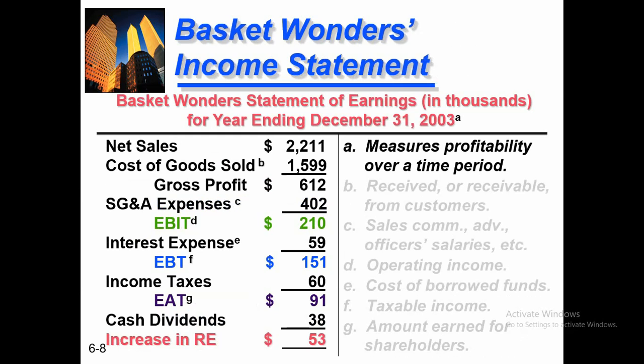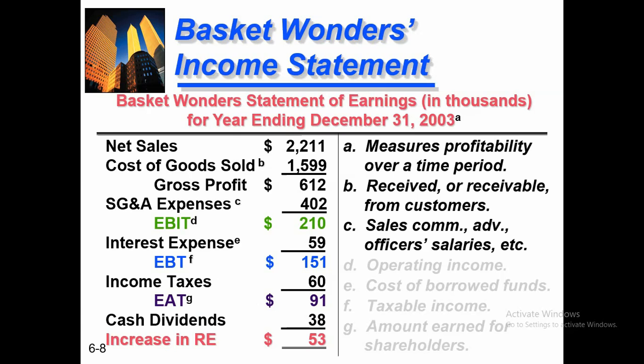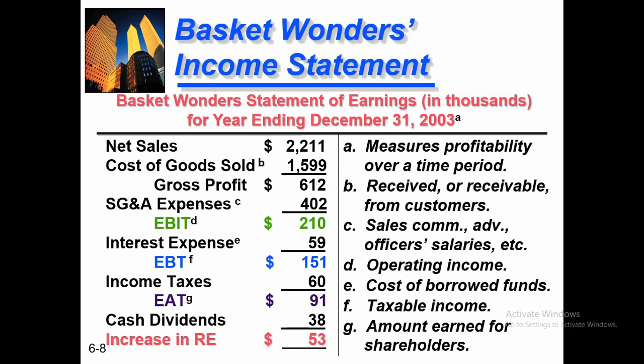Here is the income statement data. Net sales are 2,211, cost of goods sold is 1,599, gross profit is 612, EBIT is 210, interest is 159, and earnings after taxes (EAT) is 91, with an increase in retained earnings of 53. This data will also be used to identify the efficiency of operations of the company and to know about how the company's total productivity is going.